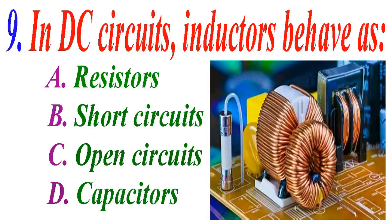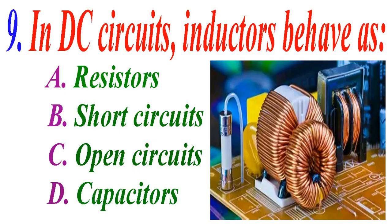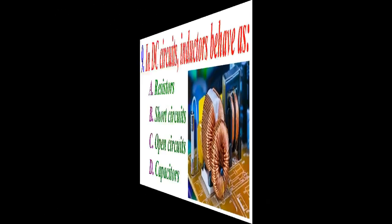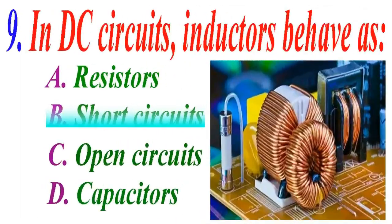In a DC circuit, inductors behave as: A resistor, B short circuit, C open circuit, D capacitor. The correct answer is B short circuit.